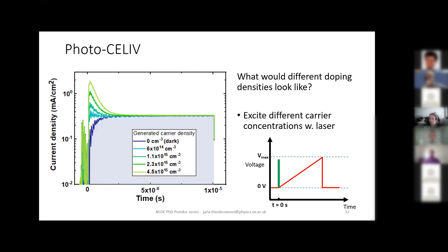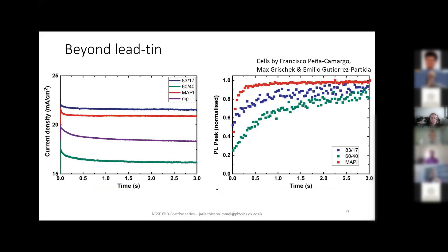Now there's one important question remaining: this was all for tin-lead perovskites, but what about purely lead-based perovskites? Is this loss mechanism inherent to tin-lead perovskites, or is it a general loss mechanism for perovskites? To find out, we performed the same measurements on purely lead-based perovskites — pin cells made by Pacho and nip cells made by Max and Emilio. We got the same results: for all the different compositions we looked into, we observed a current decay over the first few seconds, accompanied by an increase in PL over the same timescale after switching to zero volts.